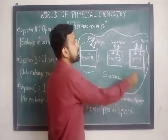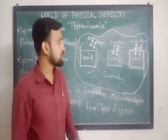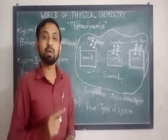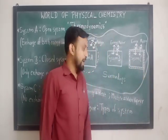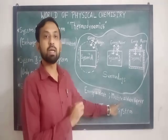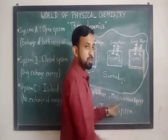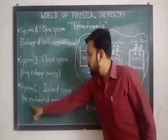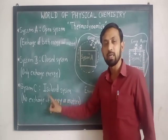In system C, there is no exchange of energy or matter. This is because the nature of the boundary is closed as well as insulated. Due to the closed boundary, there is no exchange of matter, and due to the insulated boundary, there is no possibility of exchange of energy between the system and surrounding. Therefore, the system in which there is no exchange of energy or matter between the system and surrounding is called an isolated system.